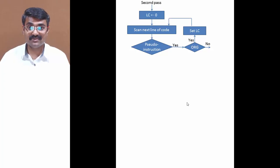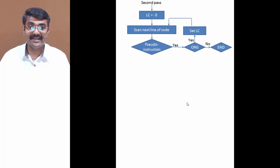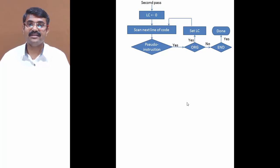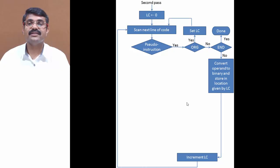If it is not ORG, we check what pseudo instruction it is. We are left with three options: END, DEC, or HEX. If it is END, we complete our second pass and the translation operation is finished. If it is not END, it would be either DEC or HEX — we convert the operand to binary and store it at the location specified by the location counter, then increment LC and scan the next line of code.